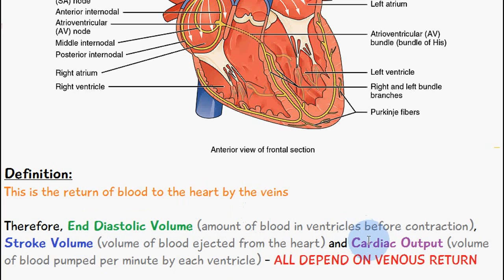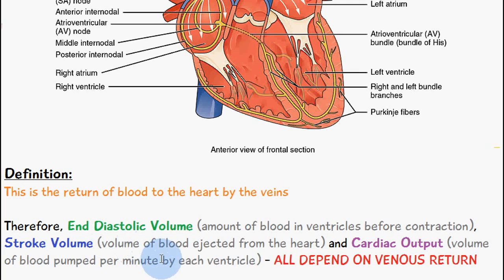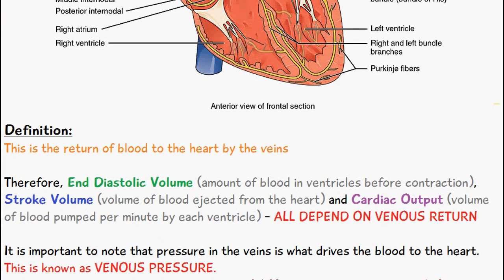Stroke volume and cardiac output all depend on venous return, because if there was some problem with the return of blood to the heart, obviously the amount of blood in the ventricles before contraction would be affected. So would the volume of blood ejected from the heart, and so would the volume of blood pumped per minute by each ventricle, because there's less or more blood returning back to the heart.